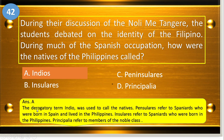The derogatory term Indio was used to call the natives. Peninsulares refers to Spaniards who were born in Spain and lived in the Philippines. Insulares refers to Spaniards who were born in the Philippines. And Principalia refers to members of the noble class.